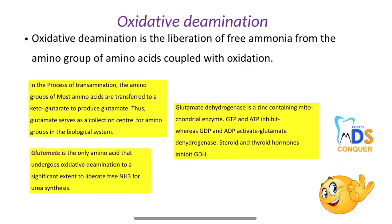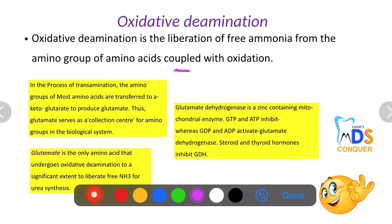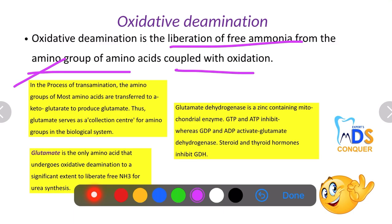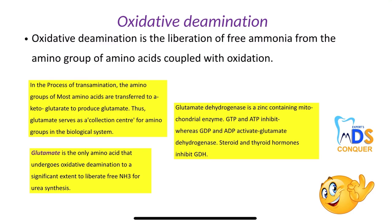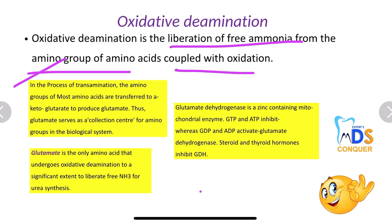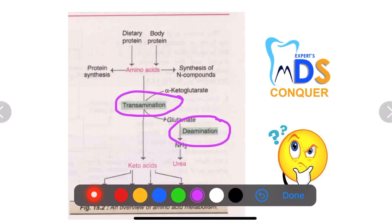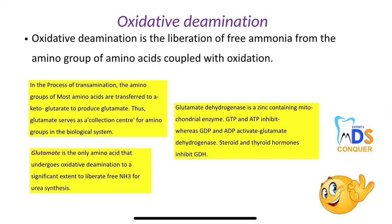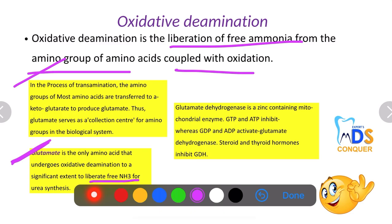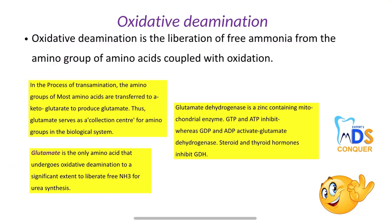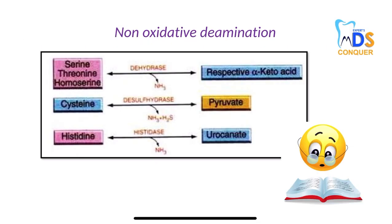Next, oxidative deamination involves liberation of free ammonia coupled with oxygen from the amine group. In transamination the transfer occurs, but in oxidative deamination there is final liberation of free ammonia. Glutamate is the only amino acid that undergoes oxidative deamination to significantly liberate free ammonia for urea synthesis. Glutamate dehydrogenase is a zinc-containing mitochondrial enzyme. Also review non-oxidative deamination examples.